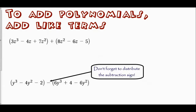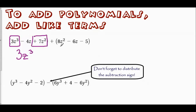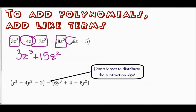Now let's look at adding polynomials — this is familiar. To add polynomials, simply add the like terms. Starting with three z to the third — no other cubic terms — bring that down. For squared terms: seven z squared plus eight z squared gives fifteen z squared. For first-degree terms: negative four z plus negative six z gives negative ten z. The remaining constant is negative five. The result is three z to the third plus fifteen z squared minus ten z minus five.